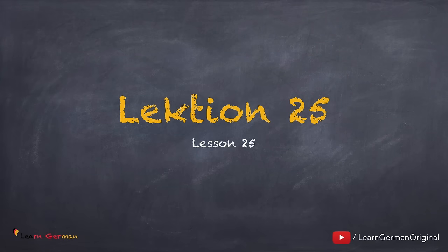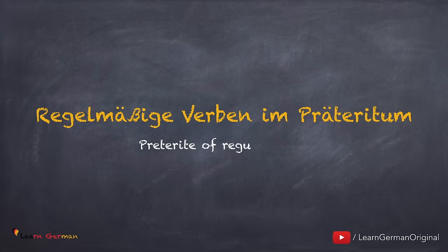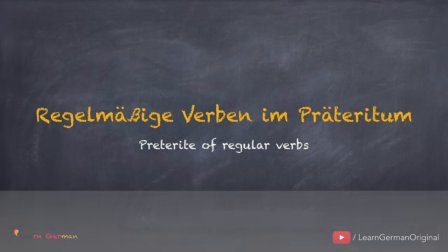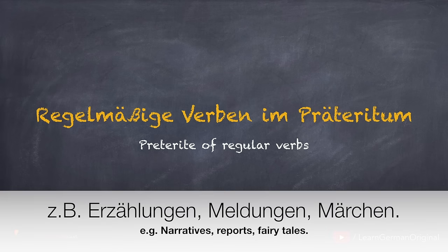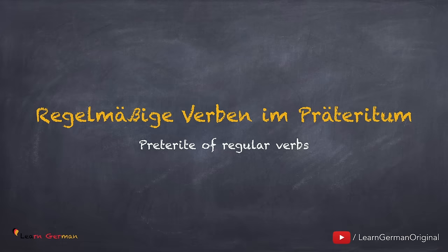Fangen wir an. Lektion 25. You have already learned that Präteritum ist eine Vergangenheitsform. Man benutzt diese Form meistens in schriftlichen Berichten, zum Beispiel Erzählungen, Meldungen, Märchen und so weiter. Jetzt lernen wir regelmäßige Verben im Präteritum.